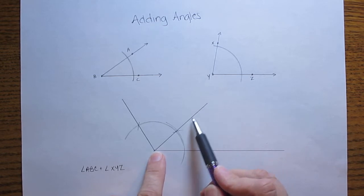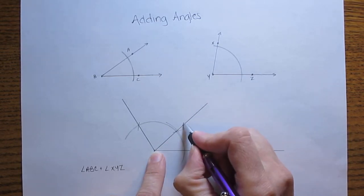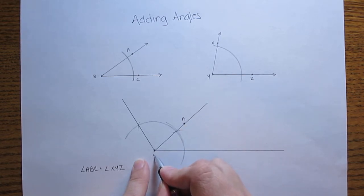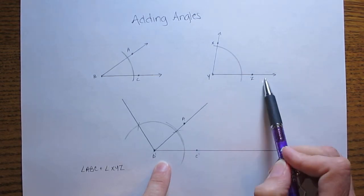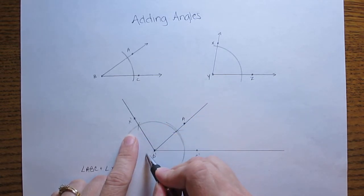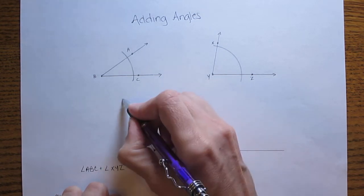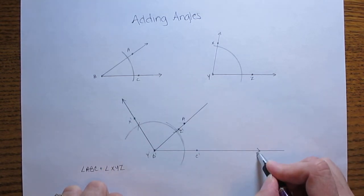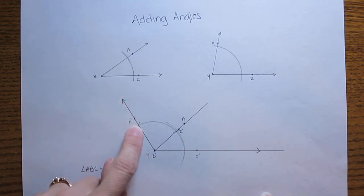So my original angle was ABC. So this could be considered A prime, B prime, C prime. And then I copied angle XYZ onto it. So X prime, XYZ. The final angle copying those two together is this larger one right here.